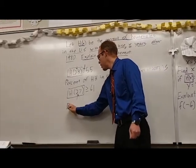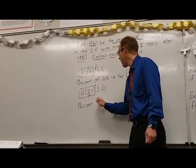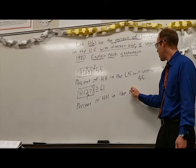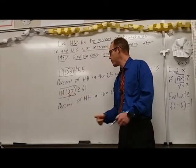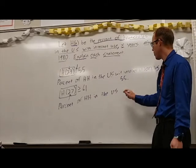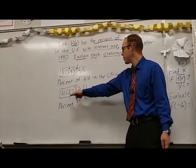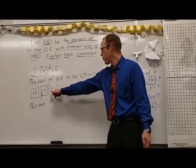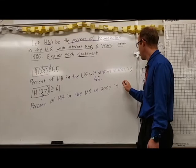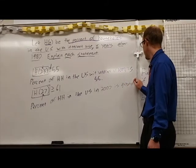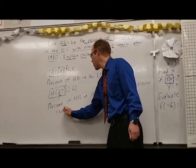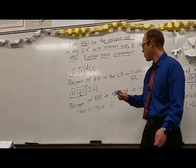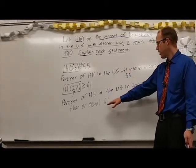So the percent of households in the United States, that's what h of 27 or h of x stands for. In, that 27 tells us that it is 2007, is greater than or equal to, is greater than or equal to 61%.